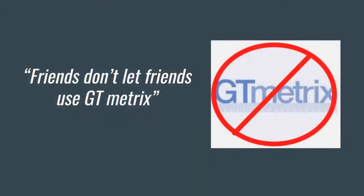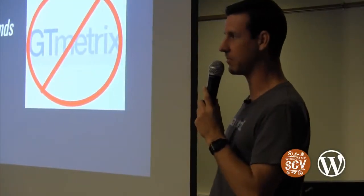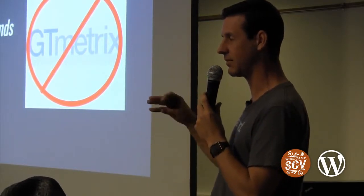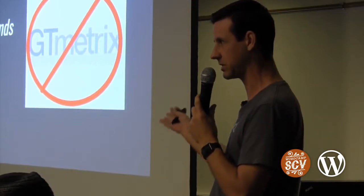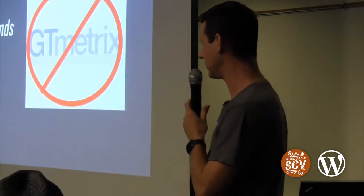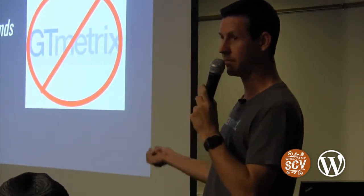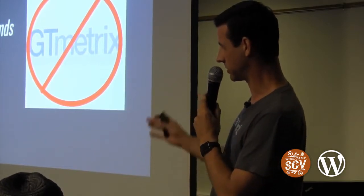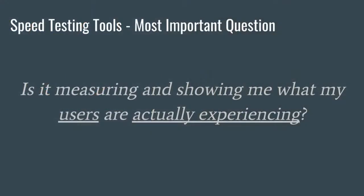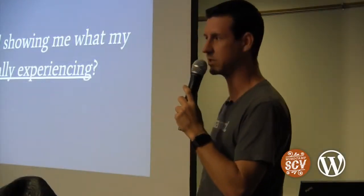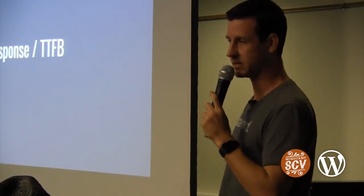A word about GT Metrics: to get a lot of the useful information, you have to sign up for a paid account or jump through screens. It shows a bunch of things that lead people down a rabbit hole away from what actually matters — time to first byte and how long it takes for your page to actually render to visitors. Ask yourself about your tool: is it measuring the most important thing and showing what your user is actually experiencing?